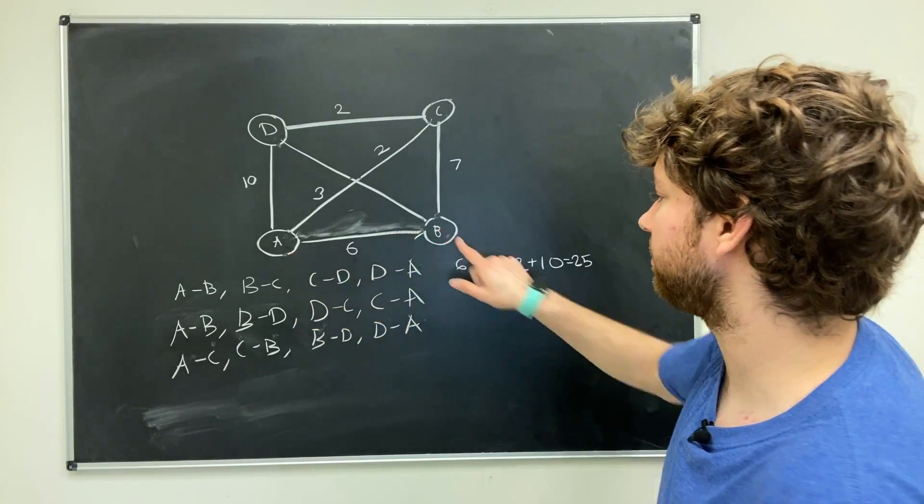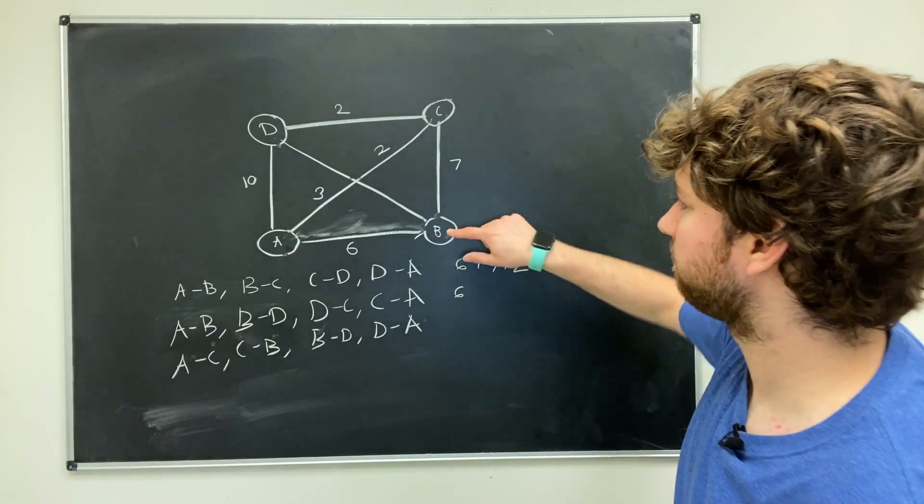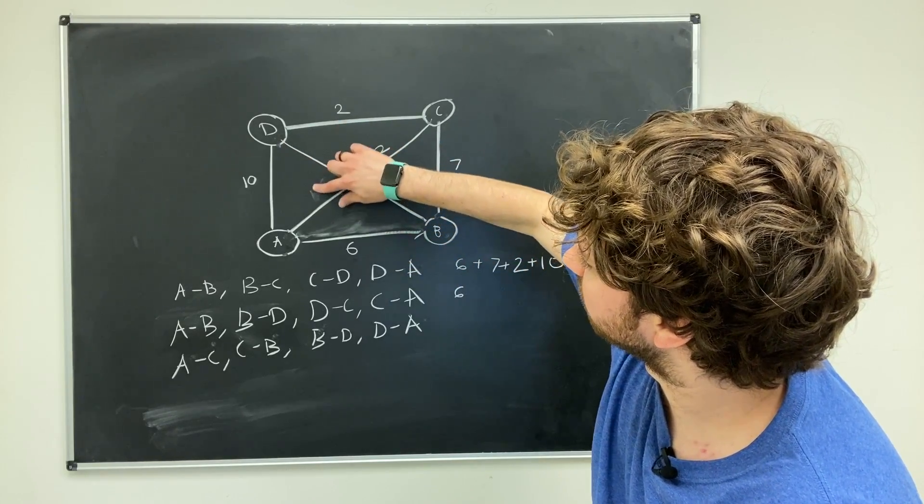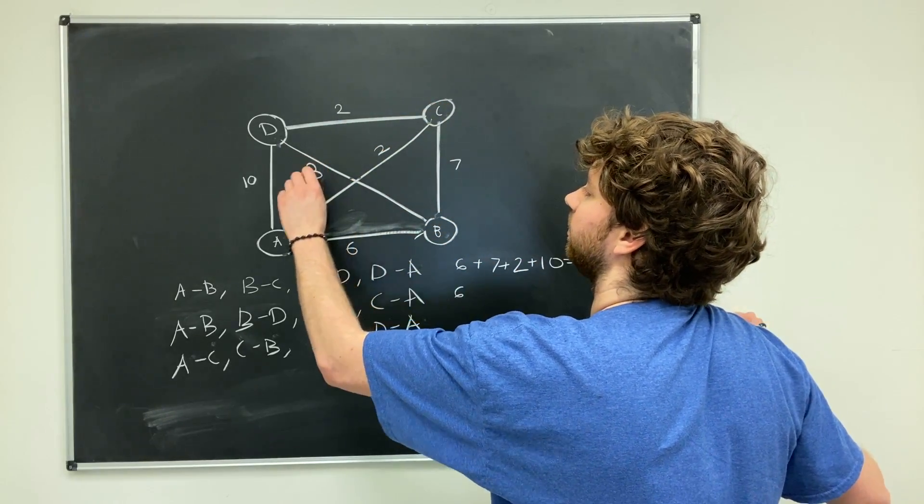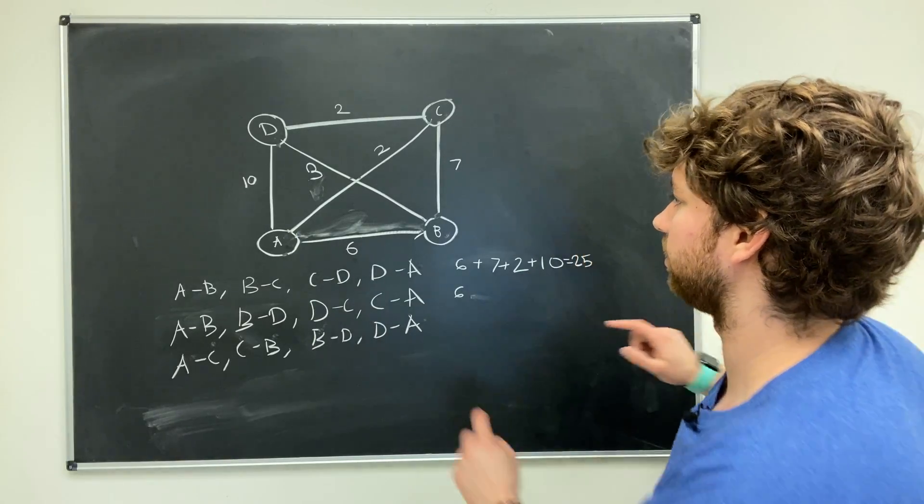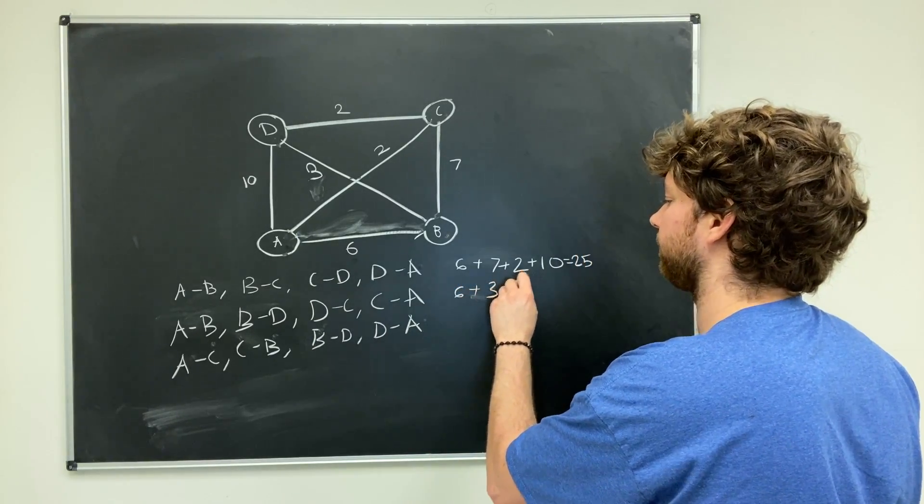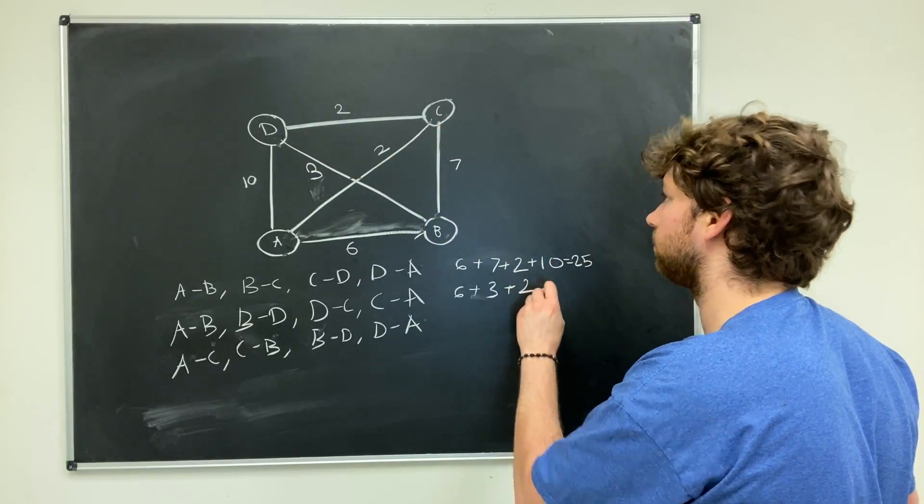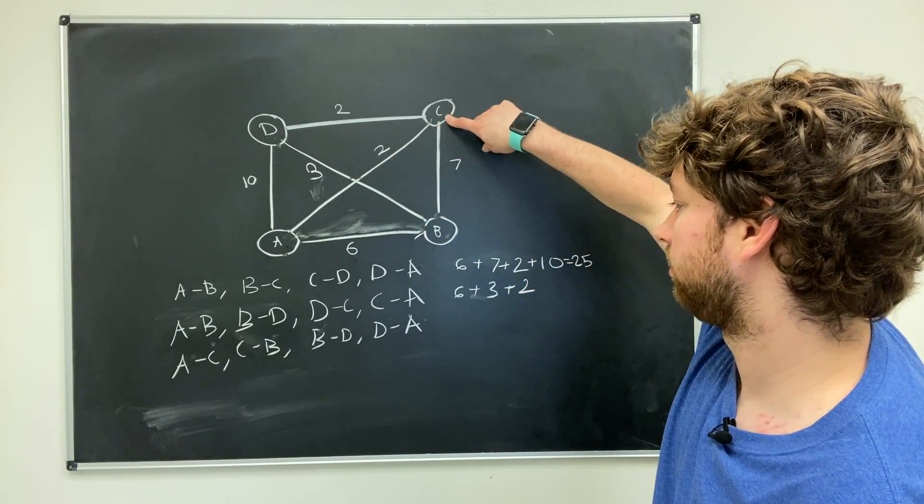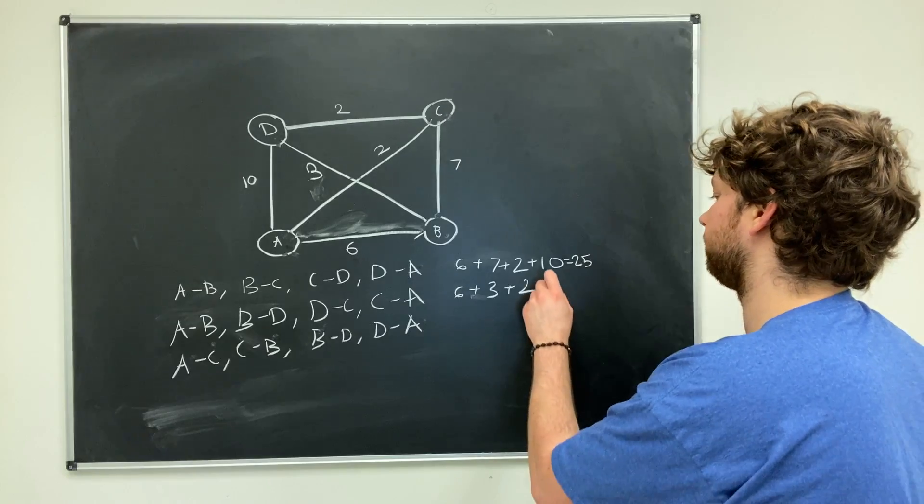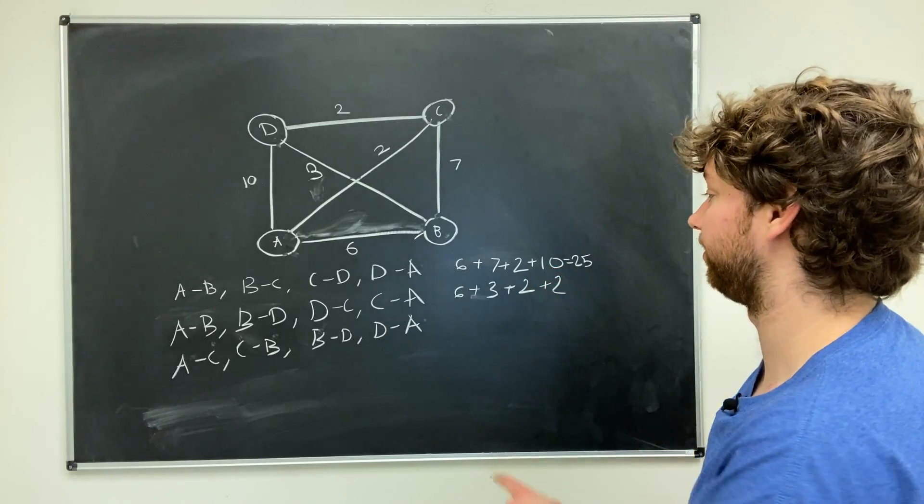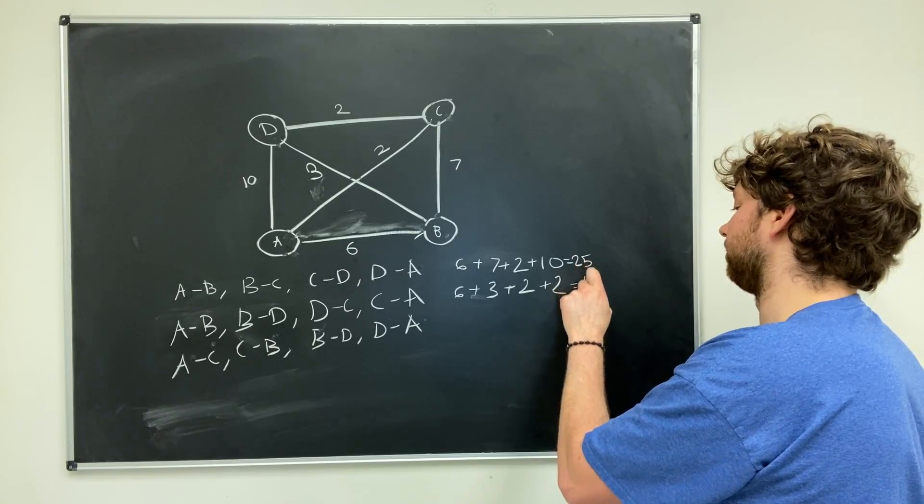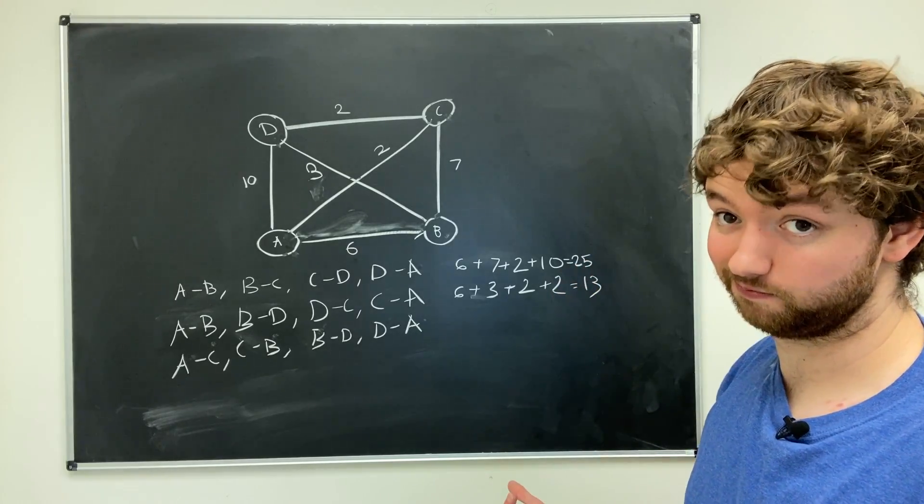Now let's try again. A to B is 6. B to D is, kind of messed up on my labeling here. Let's say this one was there. So B to D is 3. And then D to C is 2. And then C to A is 2. Ooh, that looks pretty good. This looks like 9, 10, 11, 12, 13. Nice.